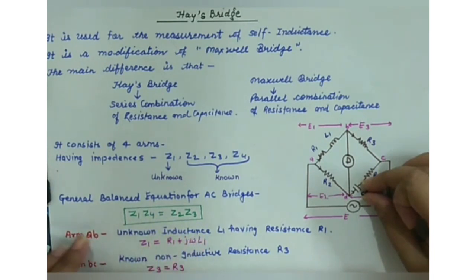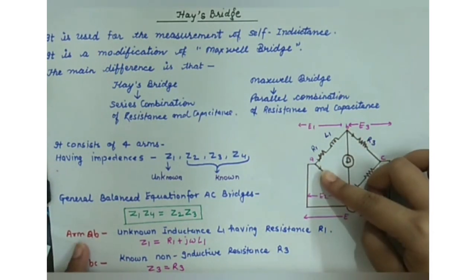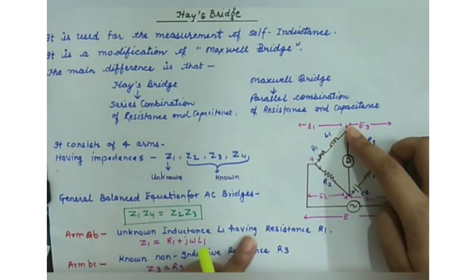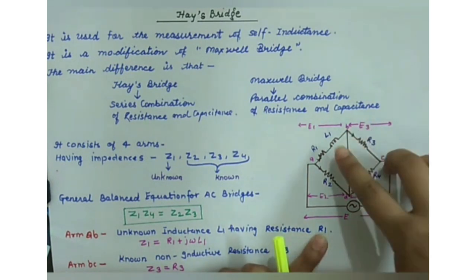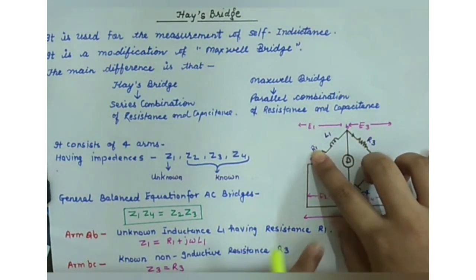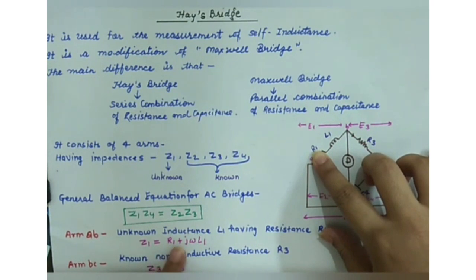First, we determine the value of impedances over the four arms. At arm AB, we have unknown impedance L1 having resistance R1. If we calculate the value of Z1, it is equal to R1 + jωL1.